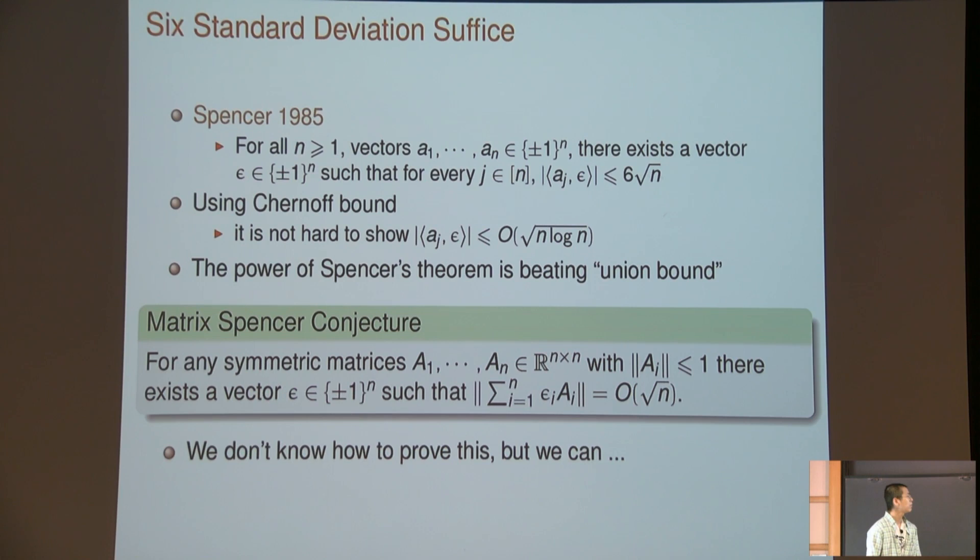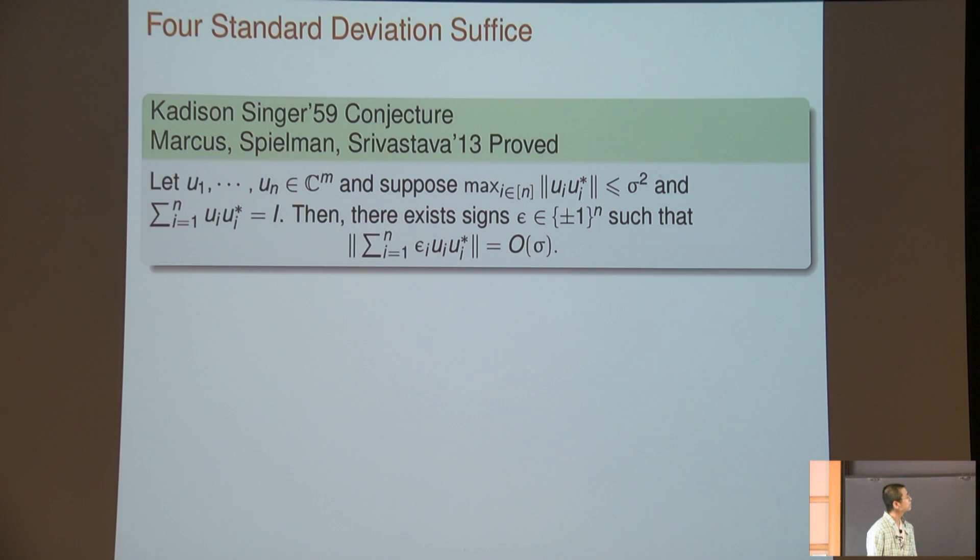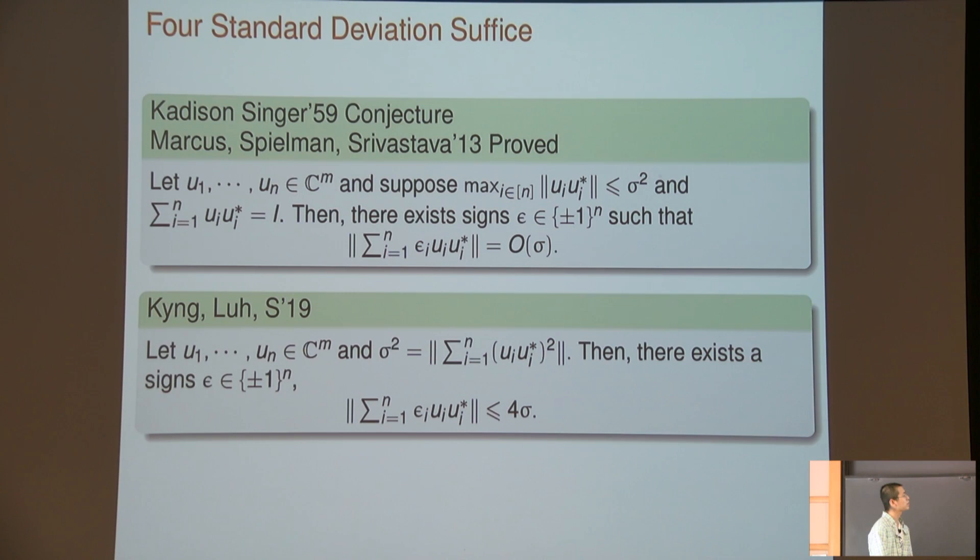There is another famous conjecture called the matrix Spencer conjecture. I'm not sure this is explicitly written in some papers, but this can be found in a blog written by Raghu Meka. The statement is, if I give you a bunch of matrices and they are all spectral norm at most one, then there exists a vector epsilon such that the summation of epsilon_i times a_i is equal to O of root n. This statement can be implemented by matrix Chernoff bound if you don't care about root log n factor. But if you just want to get root n, we don't know how to prove this. At some point, Rasmus and Kyng were trying to prove this conjecture but we somehow failed, but we can actually get something else which is not too bad.